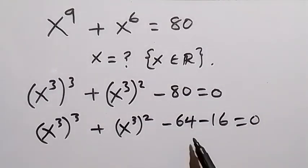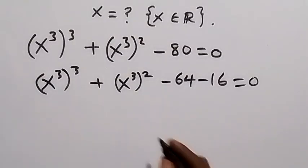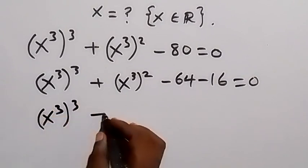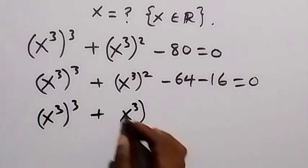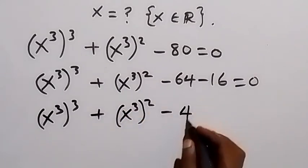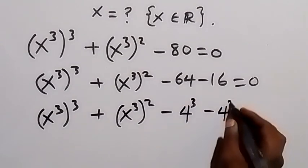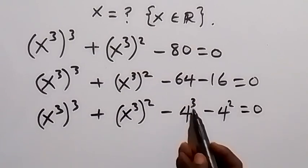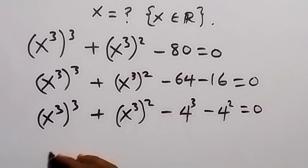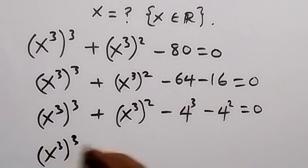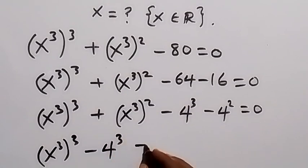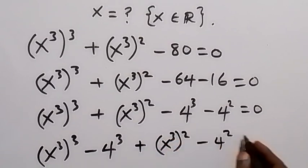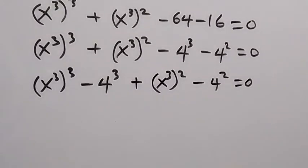Now we can write minus 80 as minus 64 minus 16. We then express 64 as 4 raised to power 3, and 16 as 4 raised to power 2. So we have (x³)³ plus (x³)² minus 4³ minus 4² equals zero.